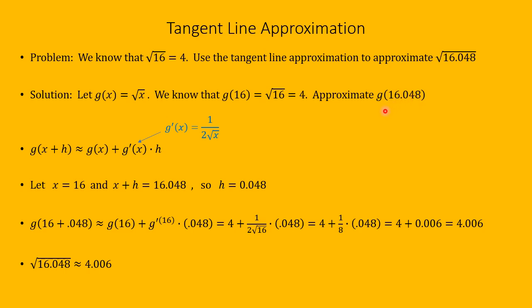We'll use the tangent line approximation formula where g of x is the square root of x. Differentiating the square root of x, which is x to the one-half power, gives g prime of x equals one-half x to the minus one-half, which we can write as g prime of x equals 1 over 2 square root of x. We let x equal 16 and x plus h equal 16.048, so h must equal 0.048.